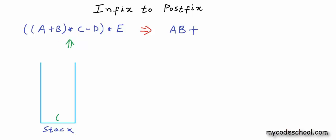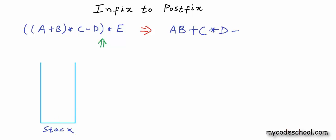Continuing the example: next we have an operator — the top of the stack is an opening parenthesis, so it simply goes onto the stack. Next we have an operand. Then another operator — the top is multiplication which has higher precedence, so it is popped and appended; the next top is an opening parenthesis, so we stop, and minus is pushed. Next we have an operand, then a closing parenthesis, so we pop until opening — minus is appended and the opening is popped. Next we have an operator and an operand. We have reached the end of the expression, so everything in the stack is popped and appended. This is my postfix expression.